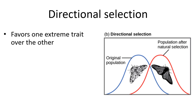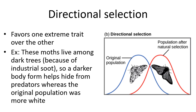Directional selection is where a trait shifts from one extreme to another. On a bell curve or frequency histogram of traits, the peppered moth is a great example — the whiter moth was originally selected for, but when the environment changed, selection shifted toward the black moths, then back to the white moths after fewer pollutants were put in the air.